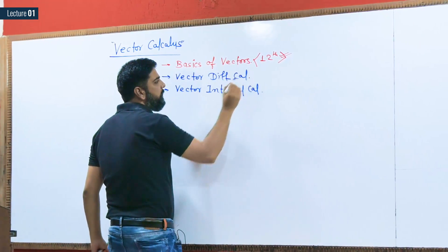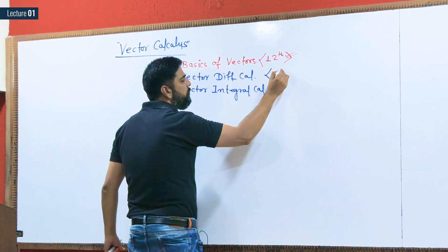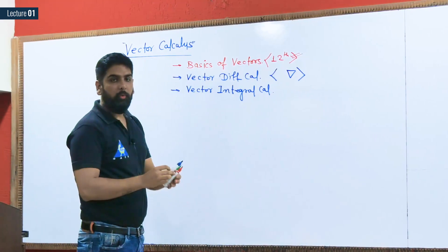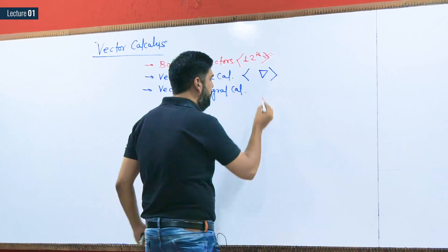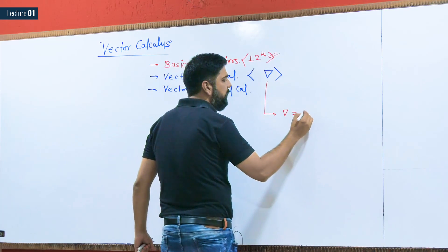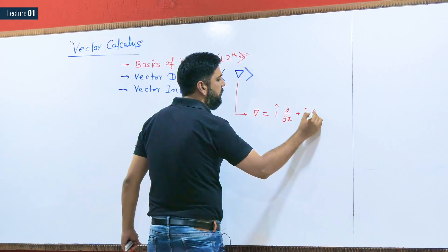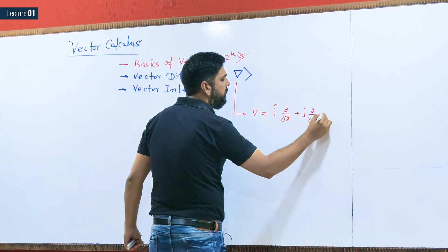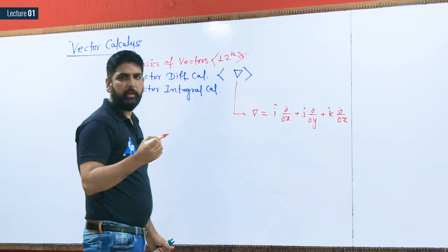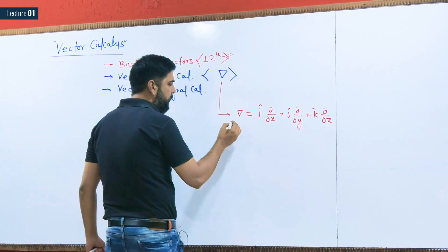In vector differential calculus we have the derivative term, which is the del operator. The del operator is defined as: del = i (∂/∂x) + j (∂/∂y) + k (∂/∂z). So this is the del operator.